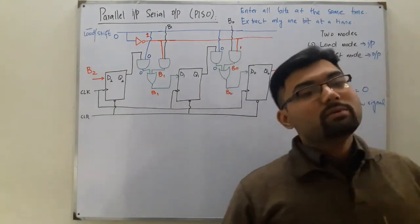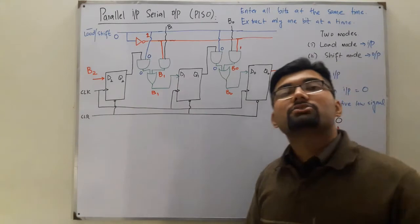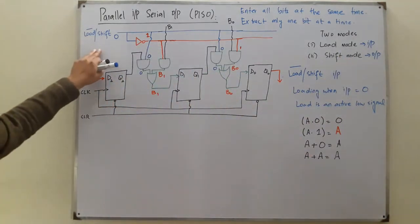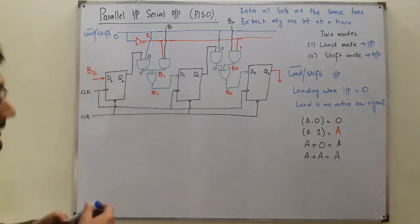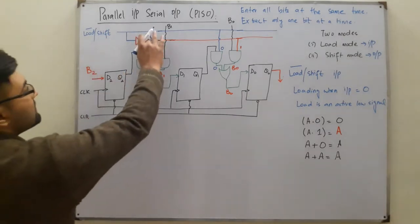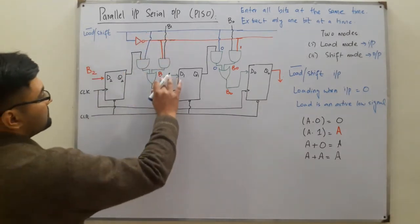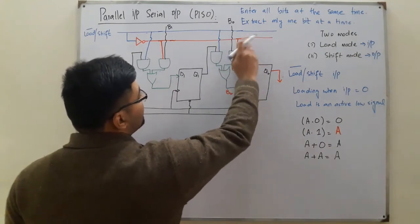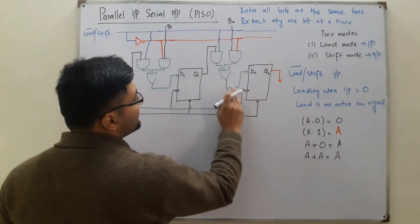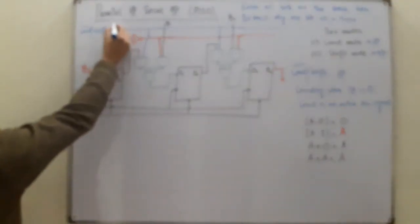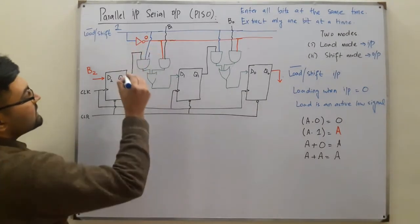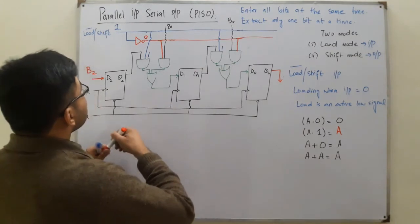Now, how do we extract the stored values? For that we need to use the shift mode. For shift mode, the load/shift input needs to be one — made high. So the complement would obviously be zero. Now a one is connected to one AND gate and a zero is connected to the other AND gate at each stage.